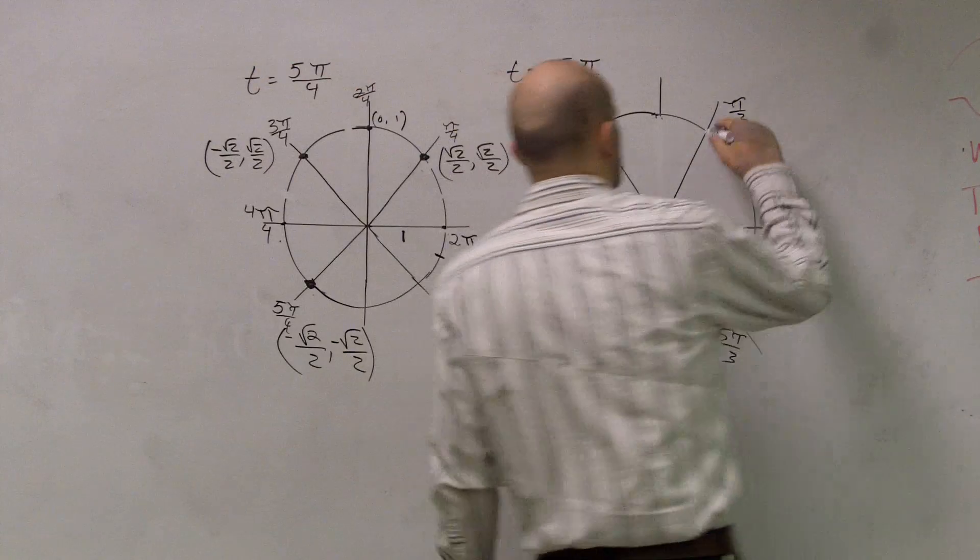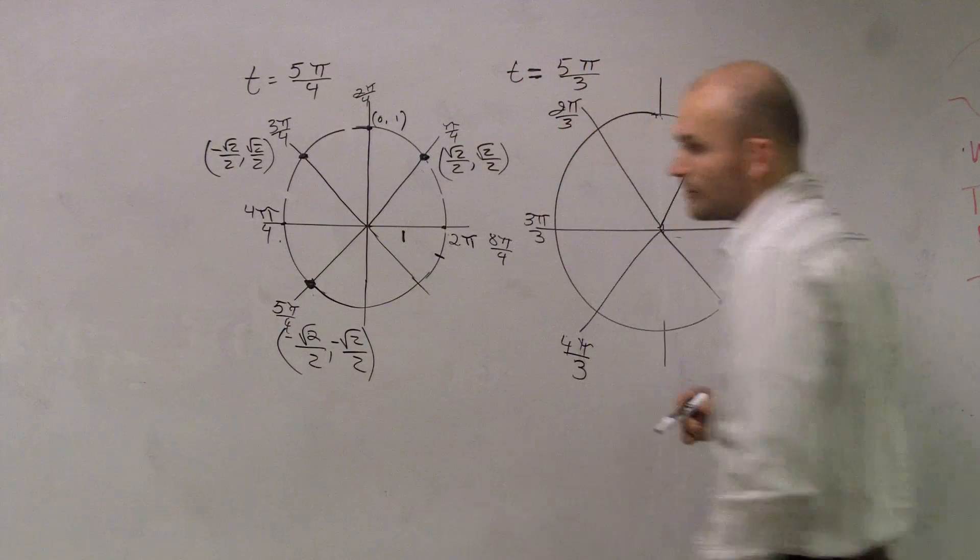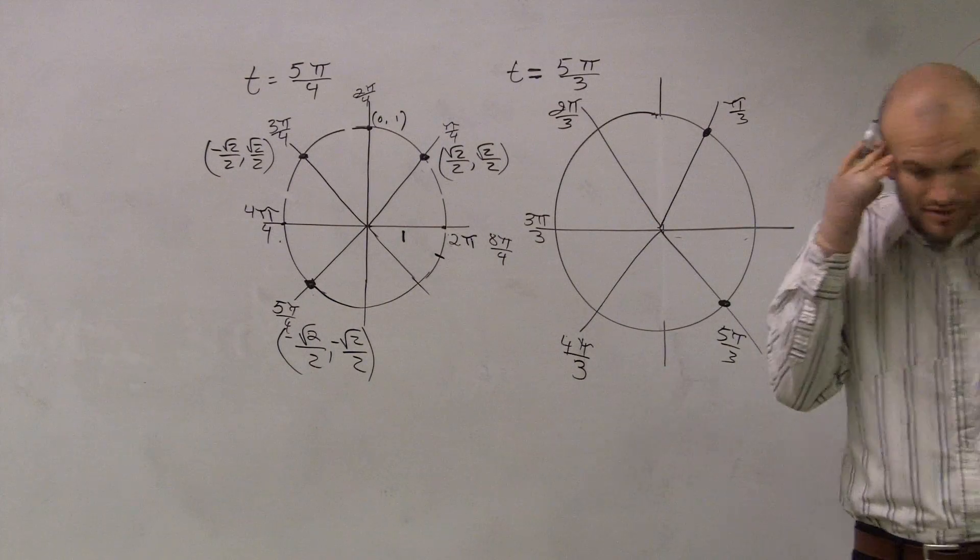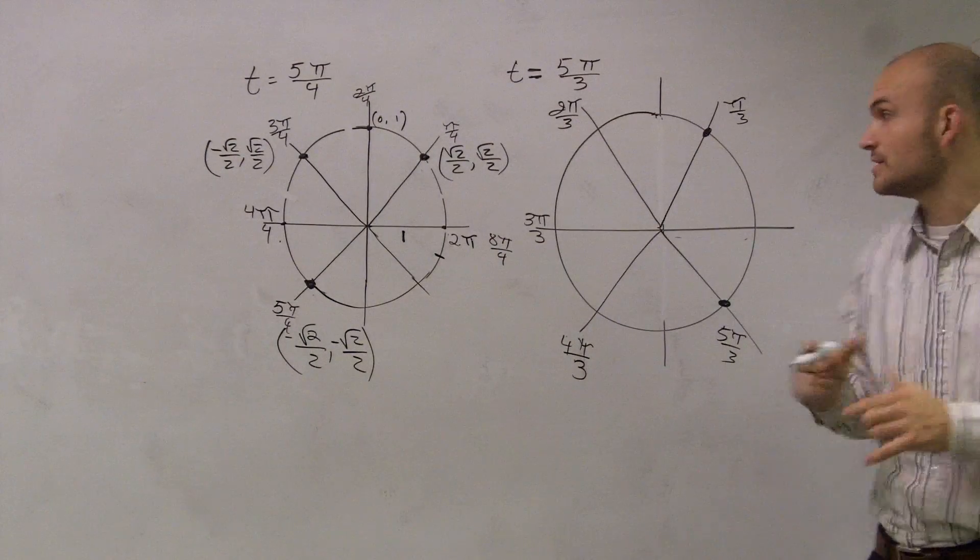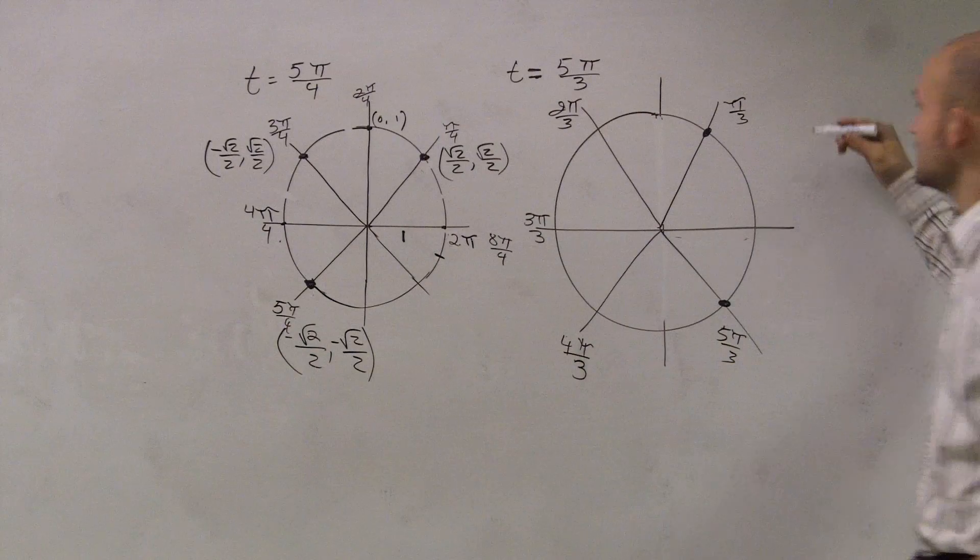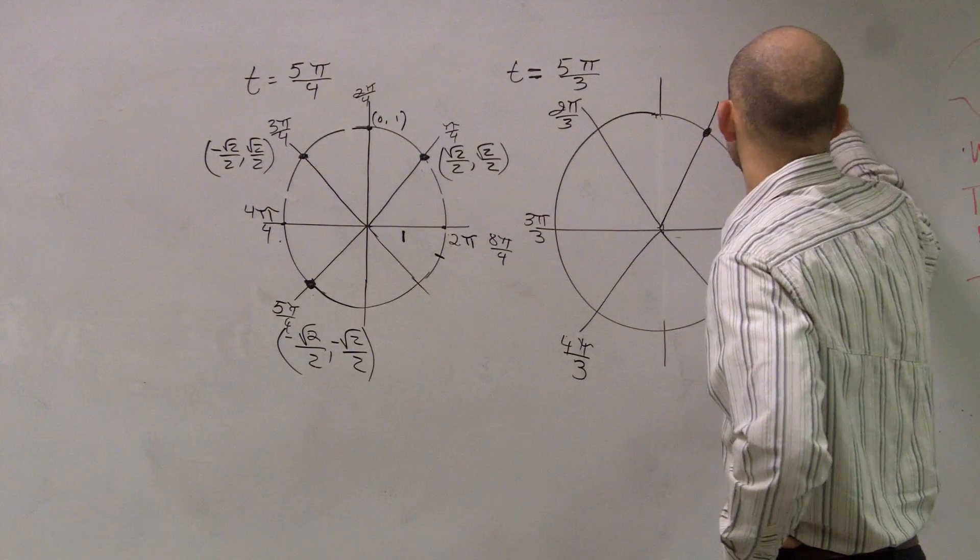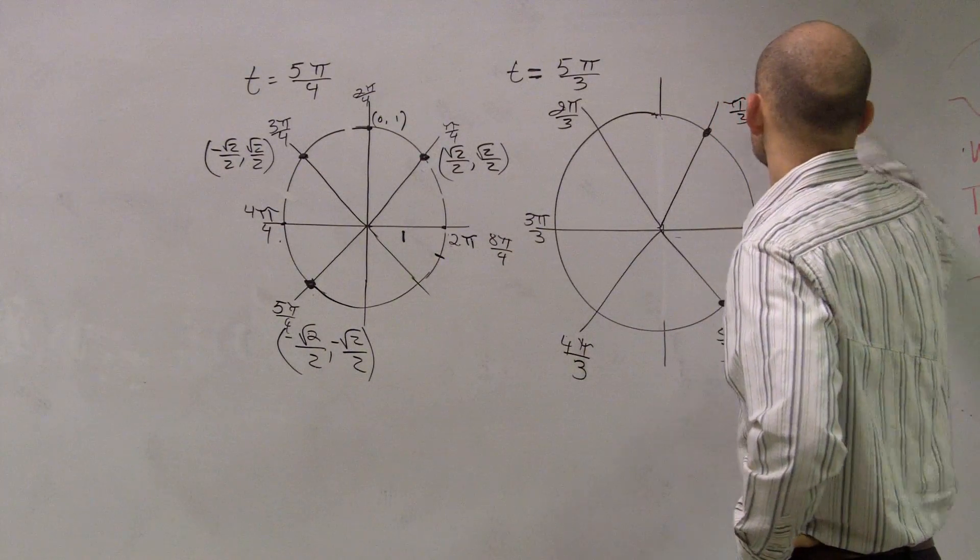Over here, we have my point pi over 3. And if you guys remember, I told you, please memorize that first quadrant. Because over here, what you guys can say is this first point is going to be 1 half comma square root of 3 over 2.